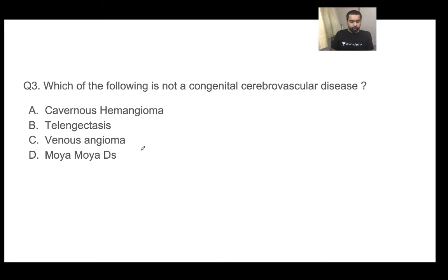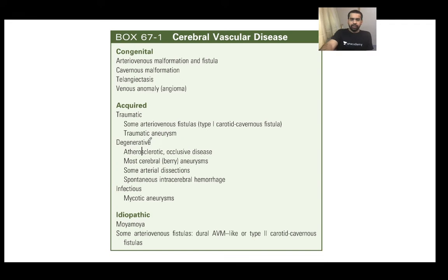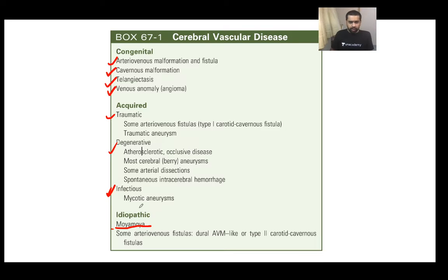Moya Moya disease is not a congenital disease — it is an idiopathic disease. From the table in Sabiston, congenital cerebrovascular diseases include arteriovenous malformation, cavernous hemangioma, telangiectasis, and venous anomalies. Acquired diseases include traumatic, degenerative, and infectious types. Moya Moya is classified as idiopathic. You should also know that on cerebral angiography, Moya Moya disease gives a 'puff of smoke' appearance.